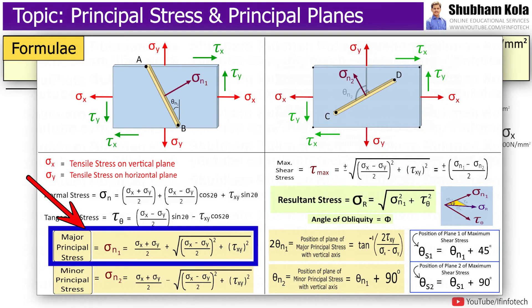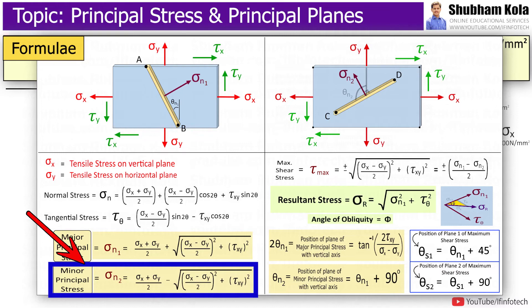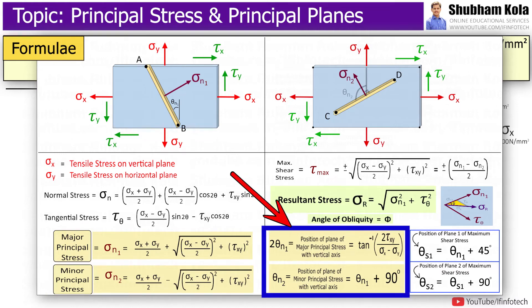Here we need to find out major principal stress, that is sigma_n1, and minor principal stress, that is sigma_n2, and position of principal planes.